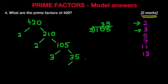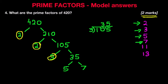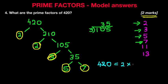Now 35 is an odd number, so it cannot be divided by 2, and it cannot be divided by 3 — it's not in the 3 times table. What about 5? Well, if it ends in a 5 or a 0, we know it can be divided by 5. 35 divided by 5 is 7, and 7 is also a prime number. So we have found all the prime factors of 420: 2, 2, 3, 5, and 7.